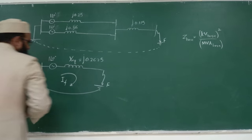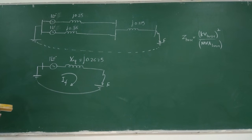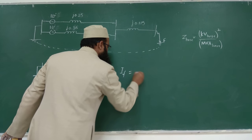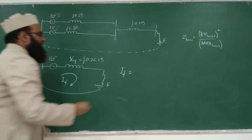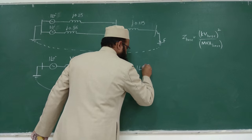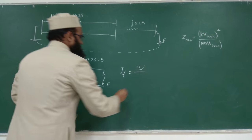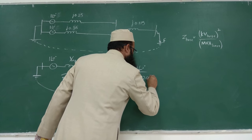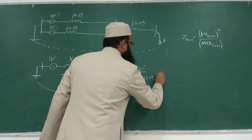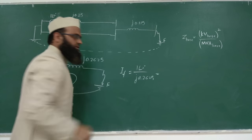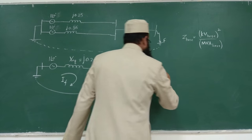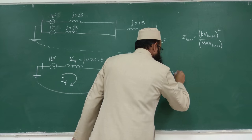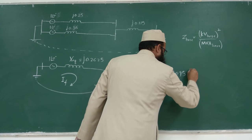The fault current IF in per unit = 1∠0 / X_eq. Evaluating the equivalent reactance and taking the reciprocal, IF comes out to approximately 3.095 per unit (magnitude). The angle is −90 degrees since the reactance is purely inductive (−j in the denominator).